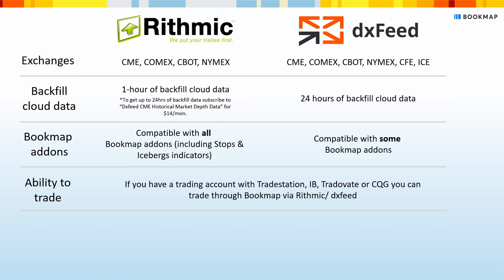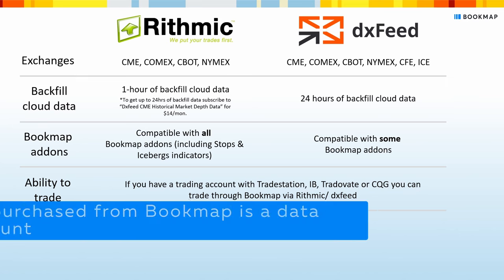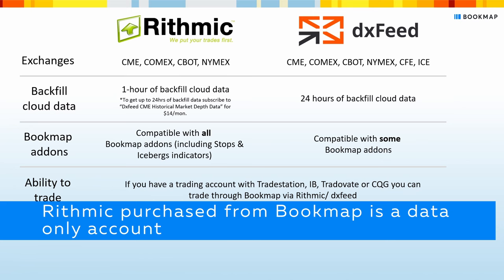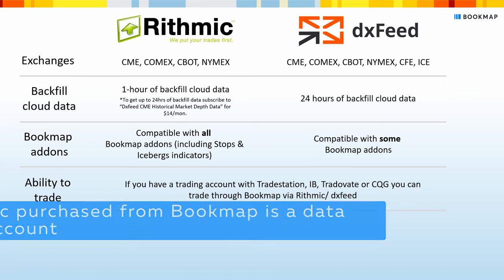More info about cross-trading is in the description. If you already have a Rithmic trading account from another provider or broker, you can use those credentials to connect and trade through Bookmap. Please note that if you purchased Rithmic from Bookmap, it's a data-only account and you won't be able to trade from the chart in live mode, only in simulation mode.